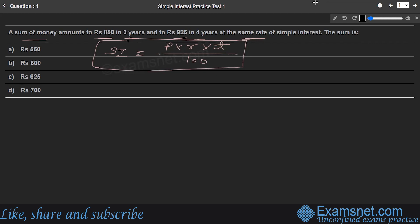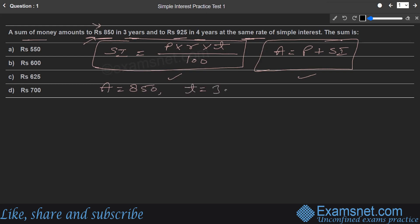Amount is nothing but principal plus the interest earned — that is, Amount = Principal + Simple Interest. The amount value is given as ₹850 in three years, so A3 = 850, and the time is three years.